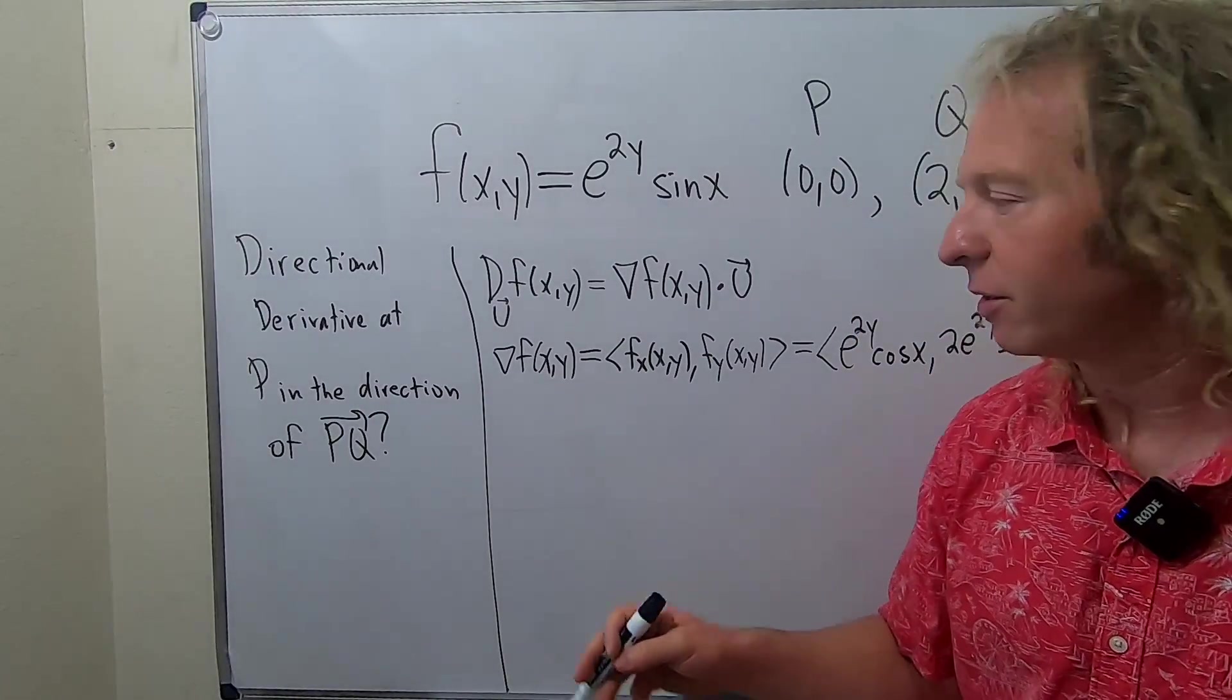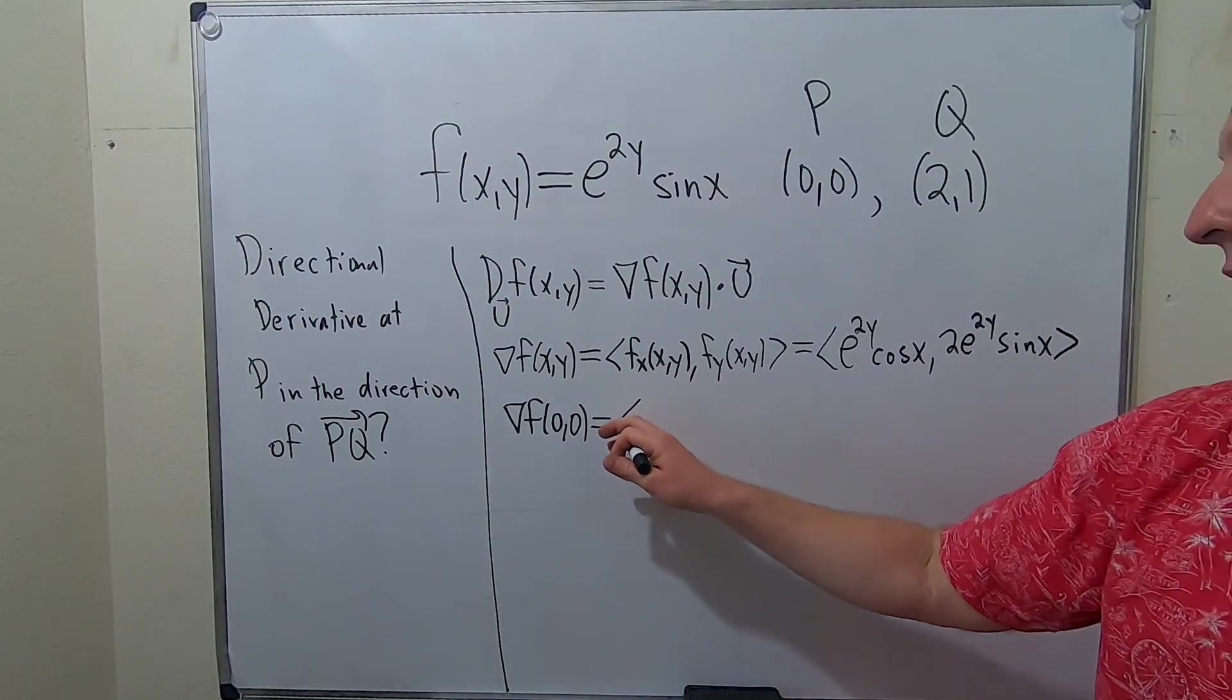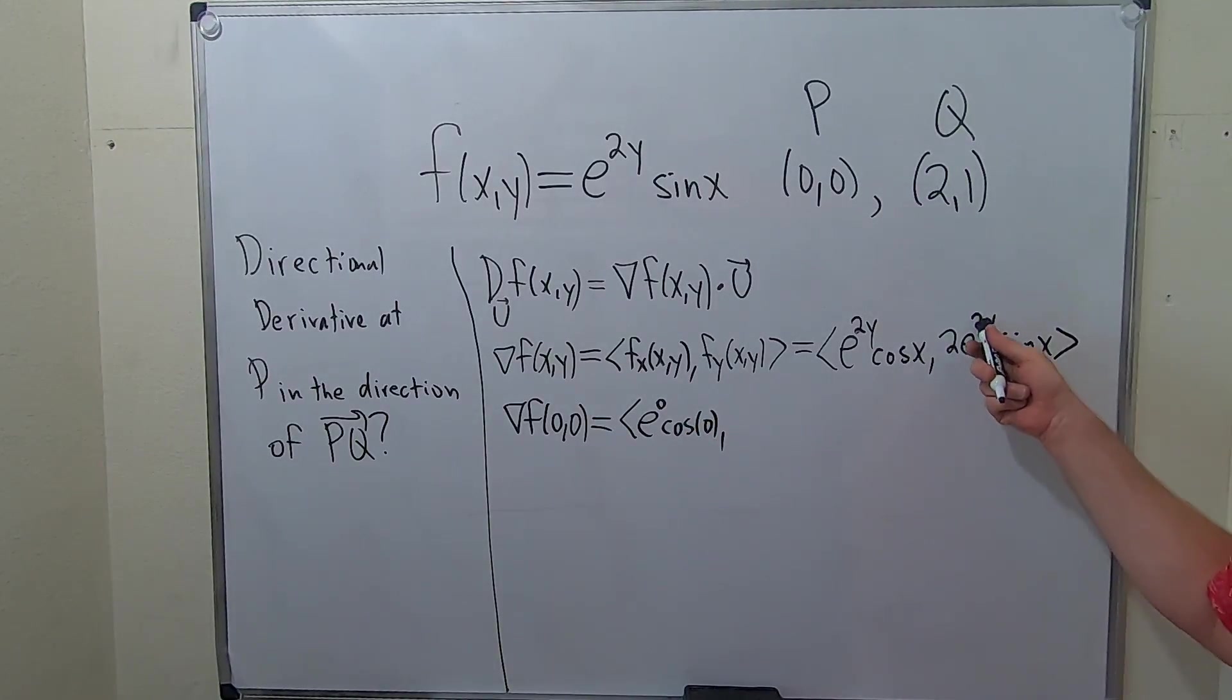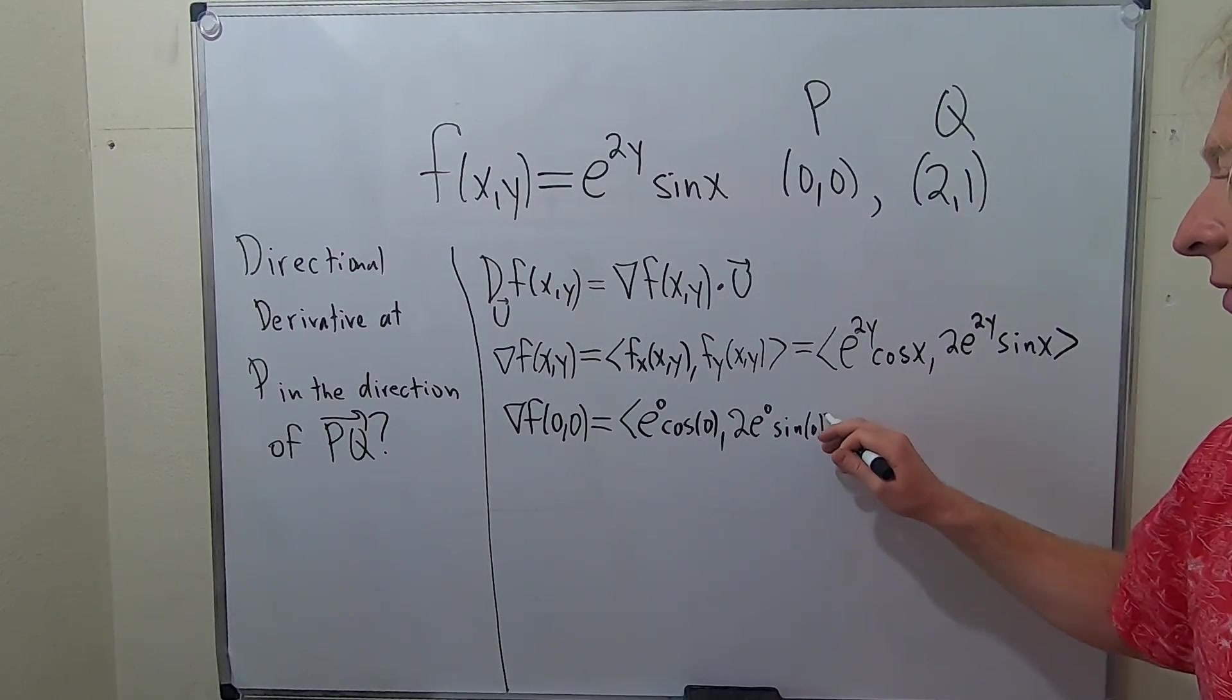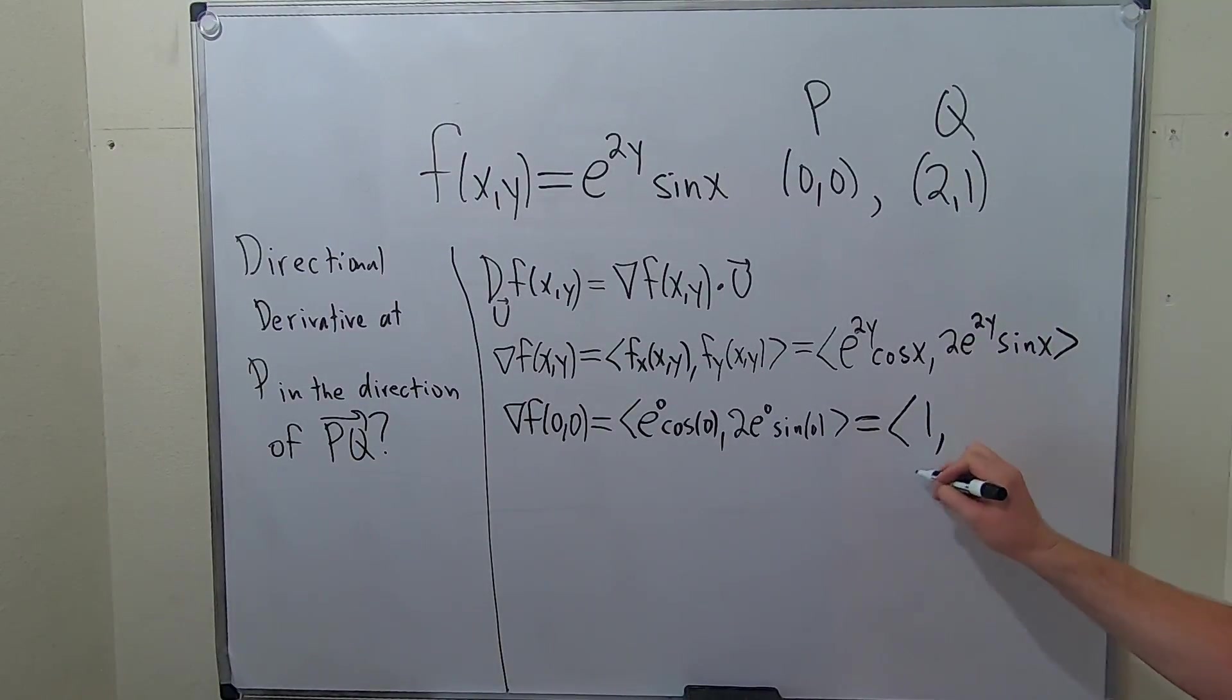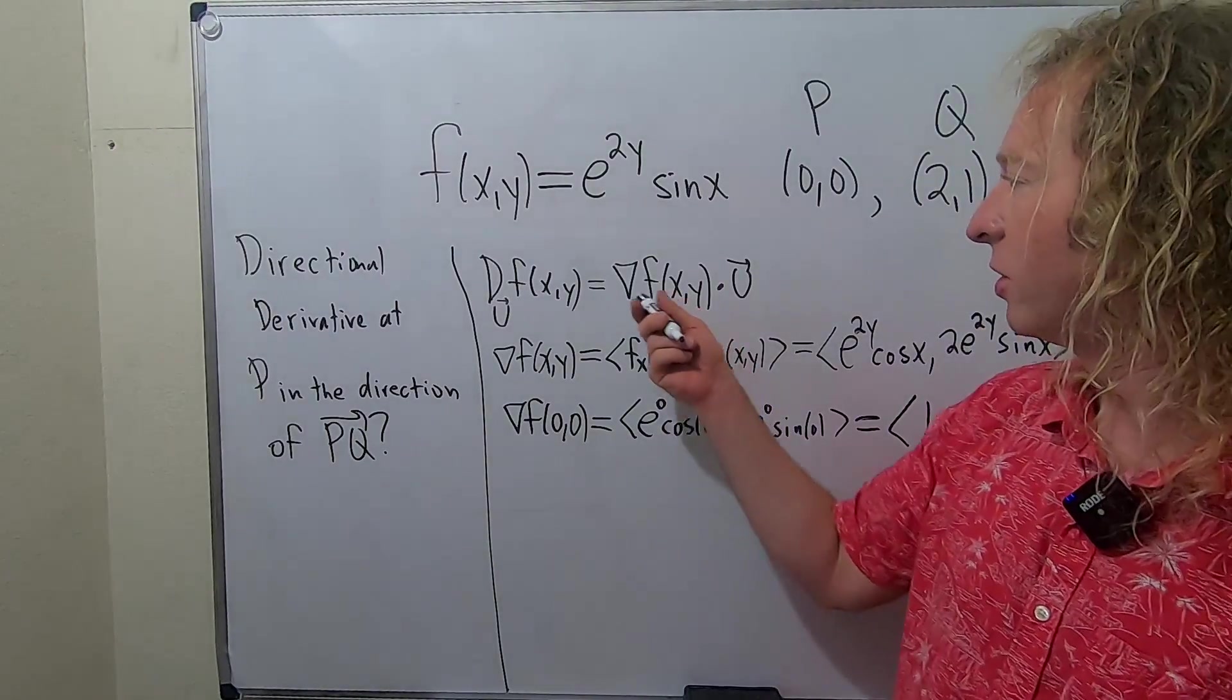Now we just have to plug in 0, 0. This is the gradient at 0, 0. So, this is equal to e to the 0 cosine 0 and 2 e to the 0 sine of 0. So, e to the 0 is 1. Cosine of 0 is 1. So, we get 1 times 1, which is just 1. Sine of 0 is 0. So, you get 2 times 0, which is 0. So, there's our gradient vector. That's going to go here.